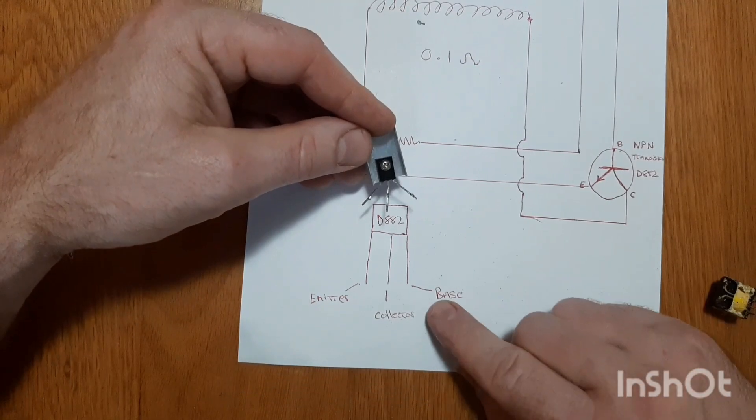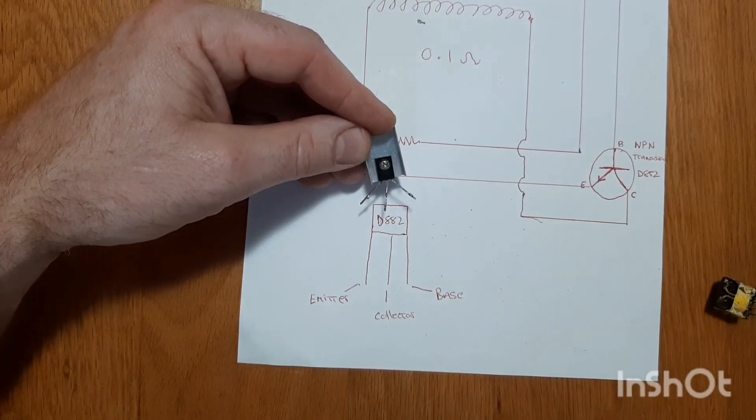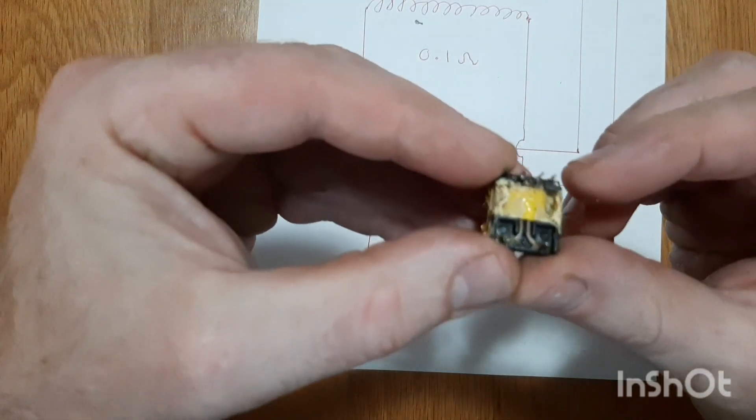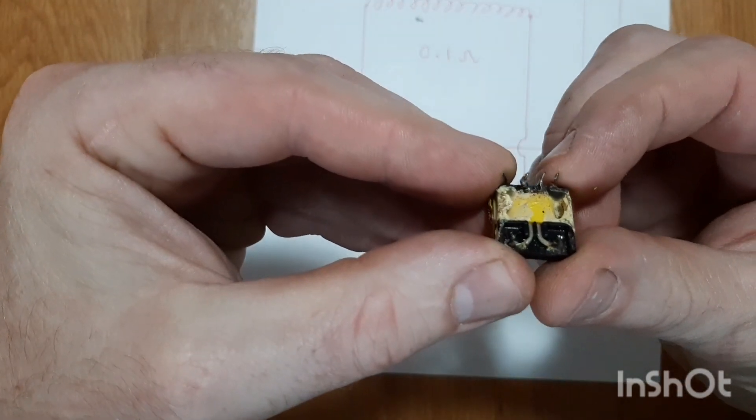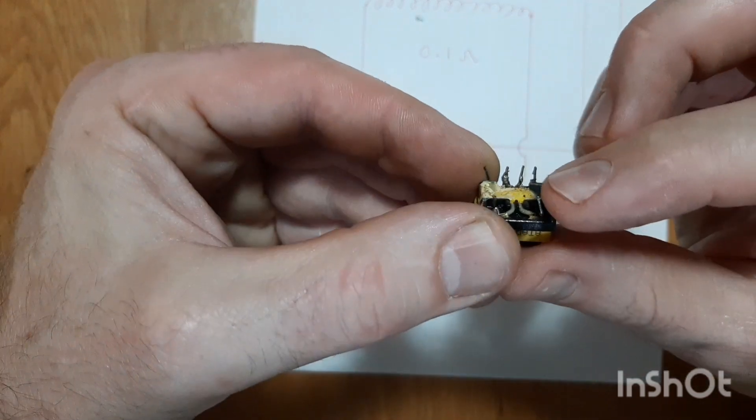This is the base and the collector, and we're going to connect it to that side of the coil. One there, that side, and then one on that side.